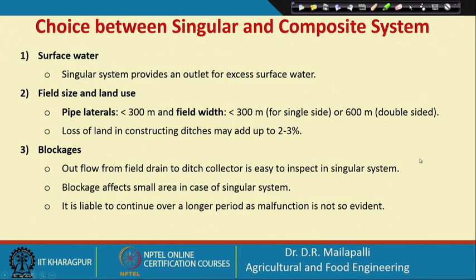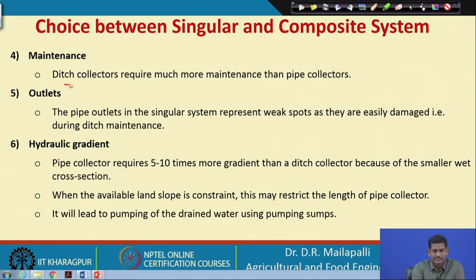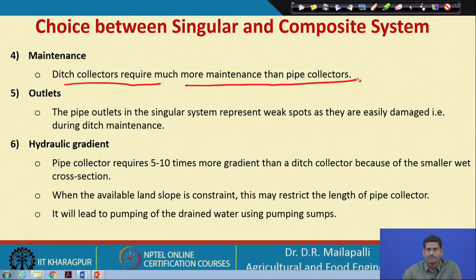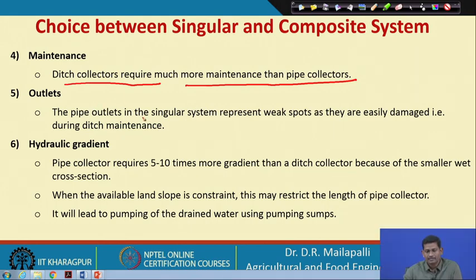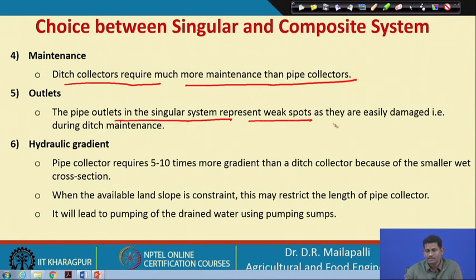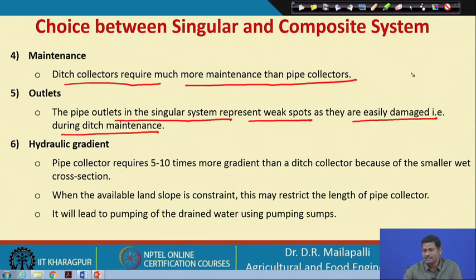Regarding maintenance, ditch collectors require much more maintenance than pipe collectors since they are exposed to the outside environment. The pipe outlets in the singular system represent weak spots because they are easily damaged during ditch maintenance, since the outlets are exposed outside the ditch, creating a chance of breakage during maintenance.